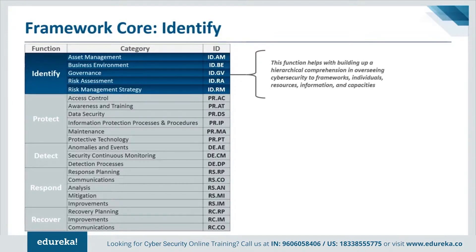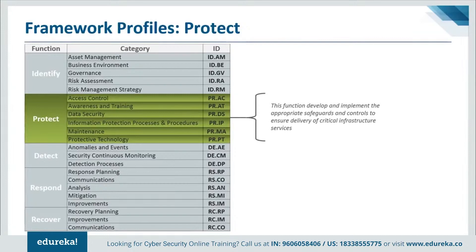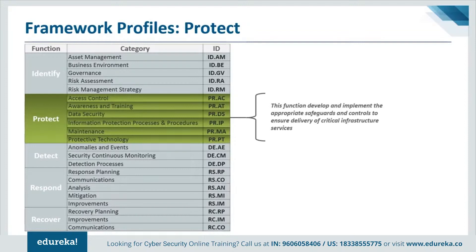The Protect function is used to develop and implement appropriate safeguards to ensure delivery of critical services. It supports the ability to limit or contain the impact of a potential cybersecurity event. Examples of outcome categories within this function include identity management and access control, awareness and training, data security, information protection processes and procedures, maintenance, and protective technology.